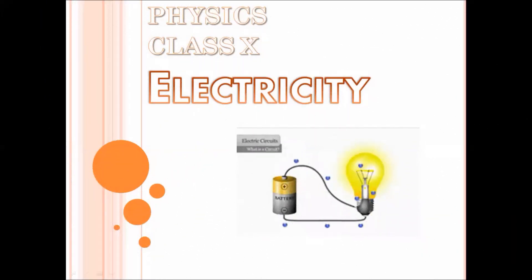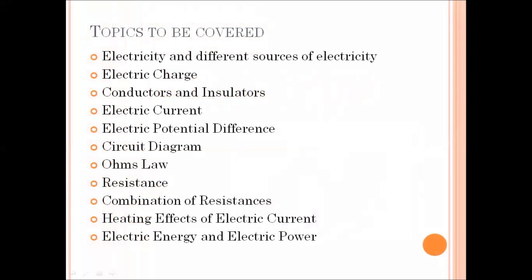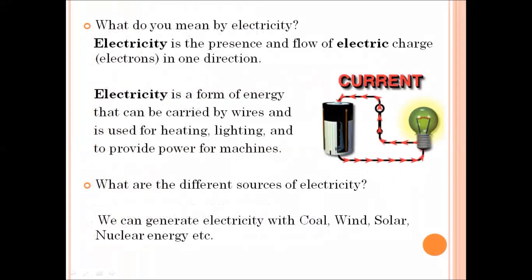Hello everyone. I am going to teach chapter electricity and the topics I am going to cover in this session are electricity and different sources of electricity, electric charge, conductors and insulators, electric current, and so on. We know many electrical appliances in our home run on electricity. Electricity is the presence and flow of electric charge or electrons in one direction. Electricity can also be defined as a form of energy carried by wires, used for heating, lighting, and to provide power for machines.